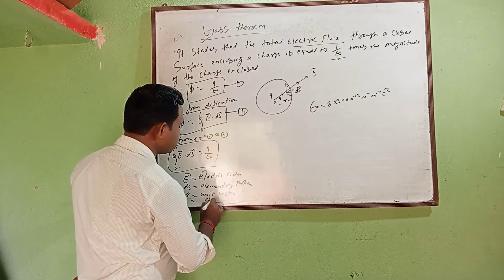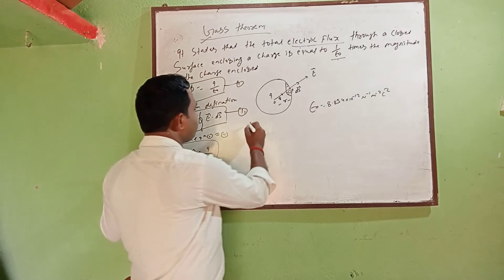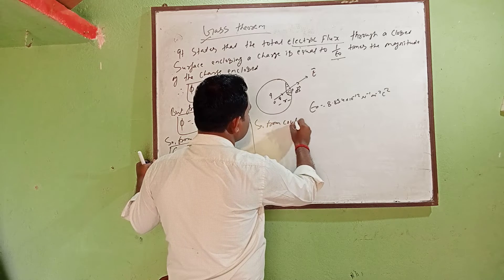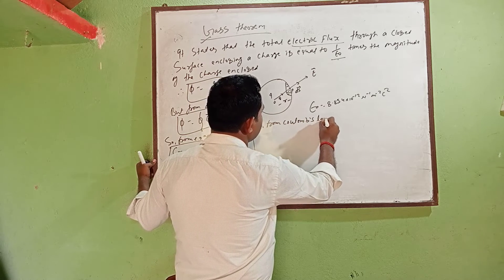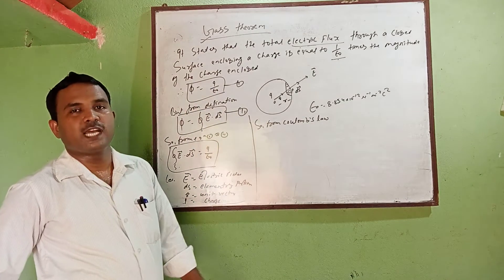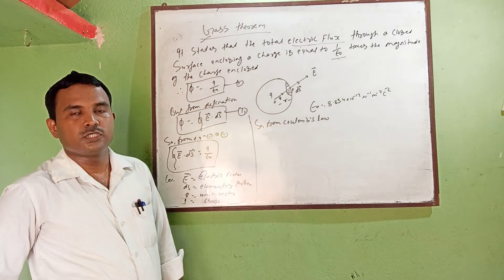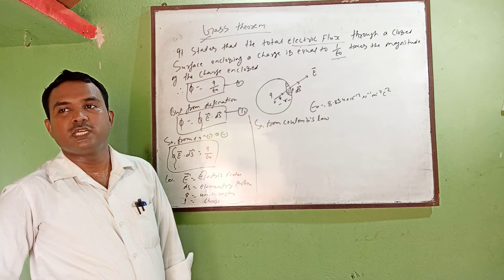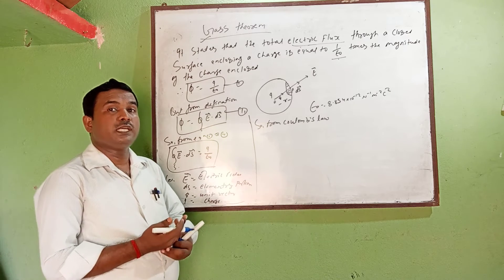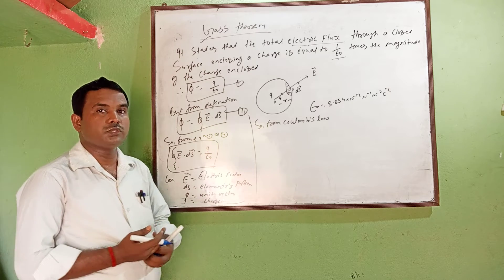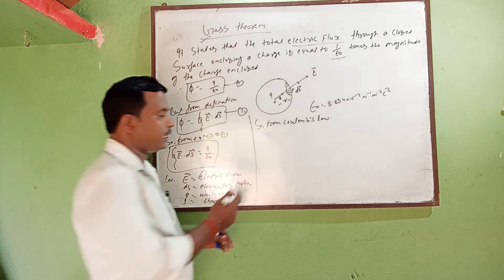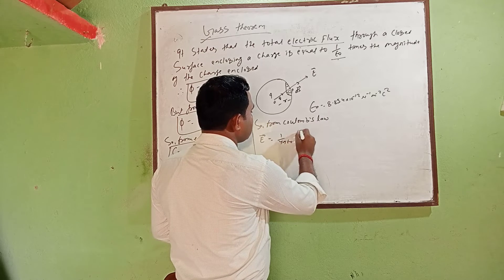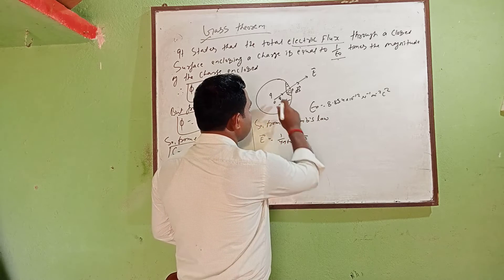From Coulomb's law, the formula is F equal to 1 by 4 pi epsilon naught times q1 q2 by r square. We use this to find the electric field, so we write E equal to 1 by 4 pi epsilon naught times Q by r square in terms of the unit vector r-hat.